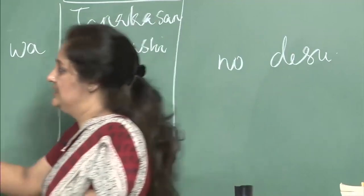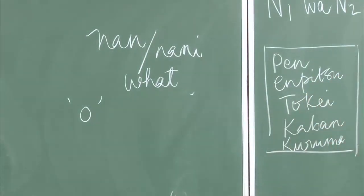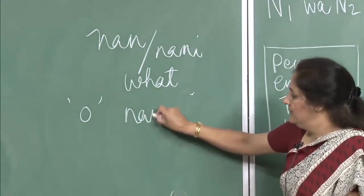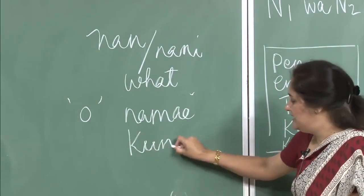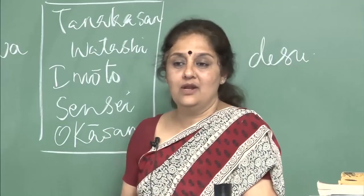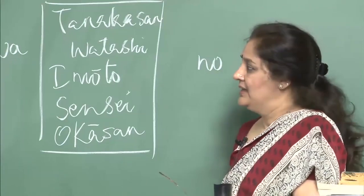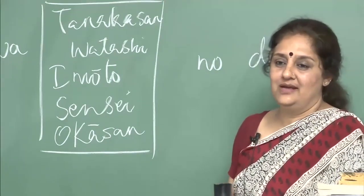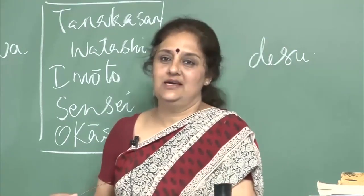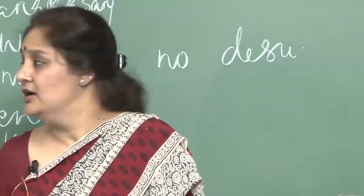You also noticed the honorific o — we have done this honorific o before. It is to show politeness and respect to the other person. It is generally used with onamae and okuni. Kuni means country, namae means name. When asking someone's name say onamae wa nandesuka, and for their country say okuni wa dochira desuka. But for your own name never use o-namae, always just namae; and for your own country say watashi no kuni wa Indo desu, not okuni.